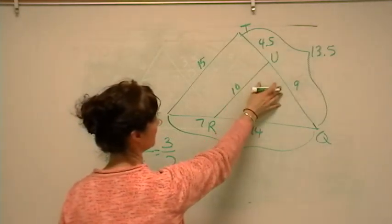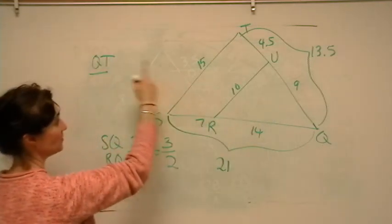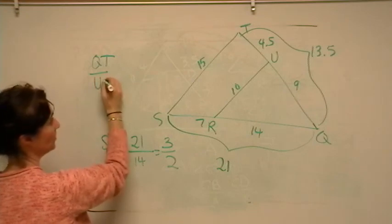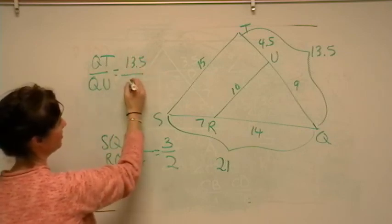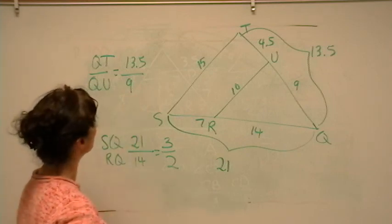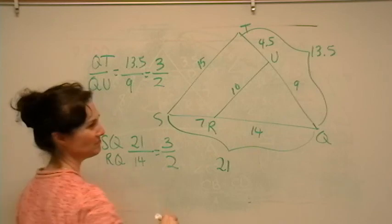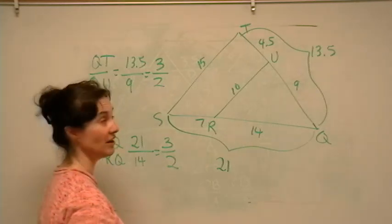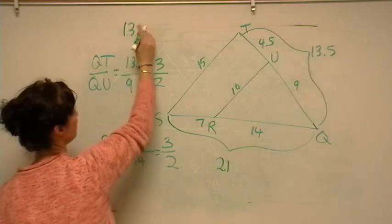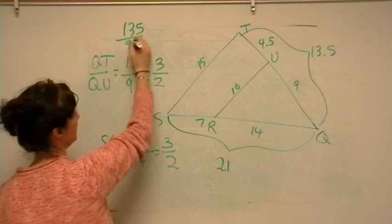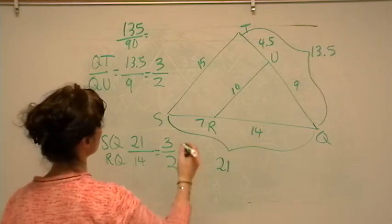Now the shortest sides are these over here. So we're going to say QT. Now we want to use the big triangle for both of those. QT to UQ. QT is 13.5, to QU, which is 9. Okay, now if you divide this, you're going to get 1.5 or 3 halves. Okay, if you're not real good working with fractions, go ahead and use your calculator. Just divide it. Always divide the top number by the bottom number. Okay, if you want to do this as a fraction, you would have to think 13.5. If you move the decimal, which is multiplying by 10, you get 135 over 90. And then you can reduce that by dividing by 45, and you get 2 and 3.